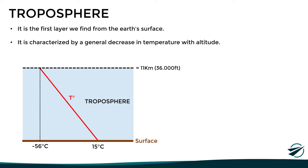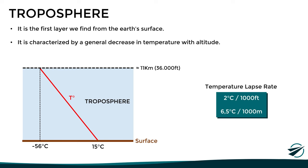Taking this into account, the average temperature lapse rate within this layer is around 2 degrees per thousand feet, or 6.5 degrees per thousand meters. However, it is important to clarify that this is an average reference value, since in reality the temperature in the troposphere can sometimes remain constant with altitude or even increase slightly when there is an inversion, but that will be discussed in another video.